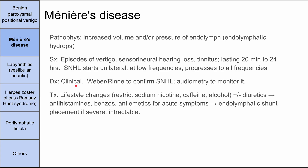Diagnosis of Meniere's is clinical. You can do Weber and Rinne tests with a tuning fork to confirm sensorineural hearing loss and should perform regular audiometry to monitor it. Treatment starts conservatively with lifestyle changes: restricting sodium, nicotine, caffeine, and alcohol, plus diuretics — which seem to help though we're not sure why. If that doesn't work, escalate to antihistamines, benzos, and antiemetics for acute episodes. For severe intractable cases, an endolymphatic shunt can be placed.